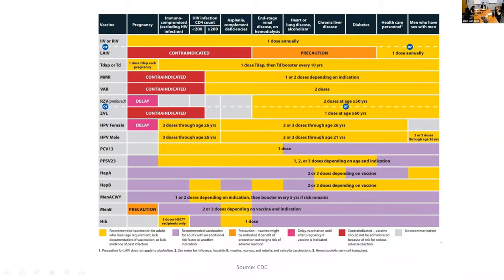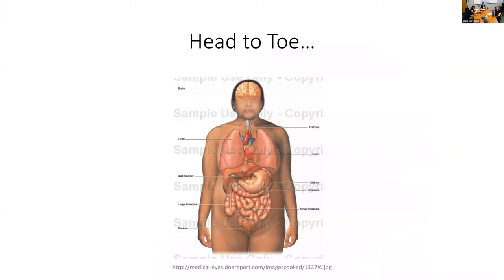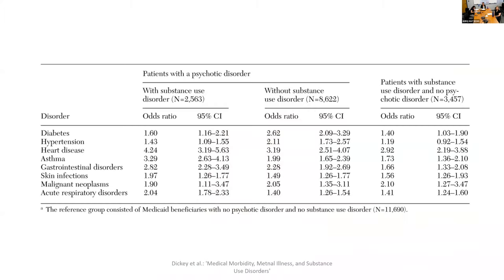We're going to talk about some different body systems and how they can be affected by one's use disorder. This slide gives more of an analytical look — a meta-analysis of medical disorders that have increased odds ratios. You see illnesses described across patients with a psychotic disorder, patients who have co-occurring substance use disorder, and patients who do not have a substance use disorder. Really all of these odds ratios increase; the only one that doesn't exclude one in the confidence interval is hypertension.